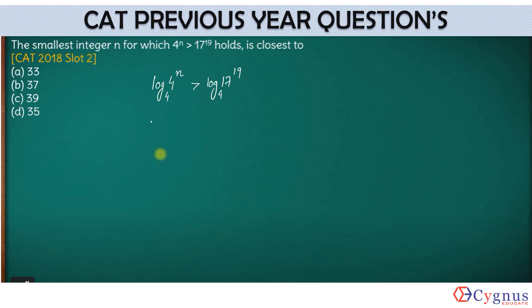Now when we write this, n comes on this side. This becomes n times log₄(4), and this will become 19 times log₄(17). Now we know that log₄(4) will be 1, so n into 1 will give you n greater than...